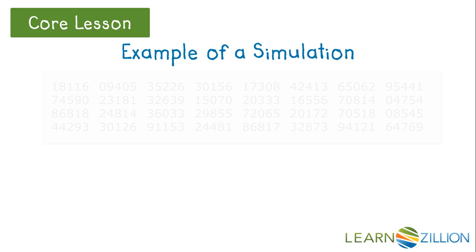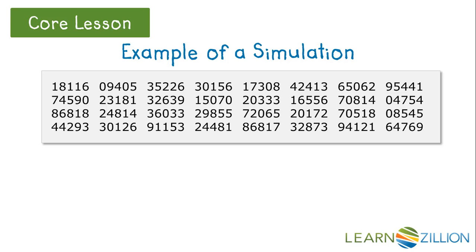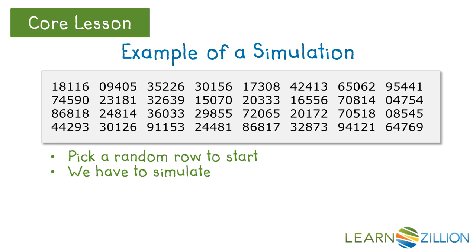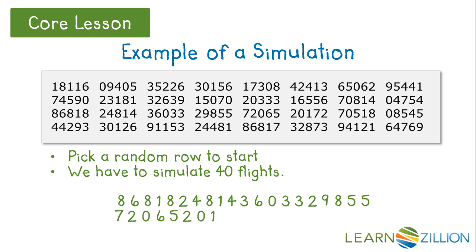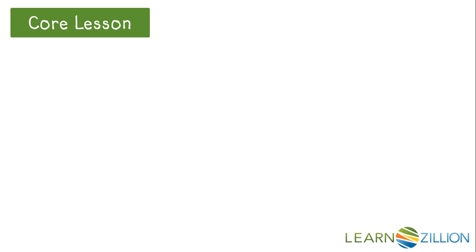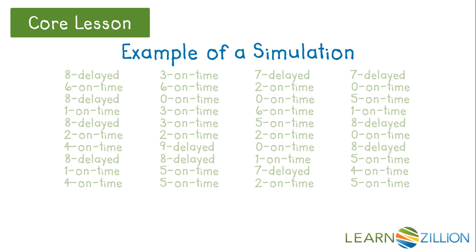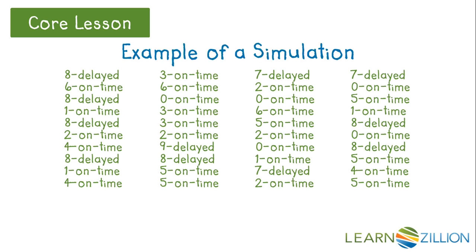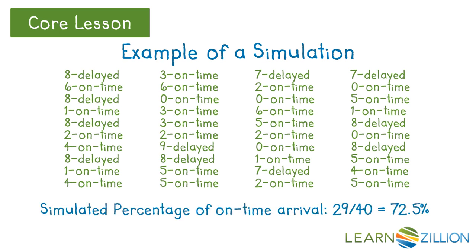This is a snippet of a random number table. We need to pick a random row to start. Let's say we start with row 3. Since we are simulating 40 flights, we need the first 40 digits in that row. Then we can go back to our assignment of numbers for on-time and delayed flights, and get a simulated percentage of an on-time arrival.